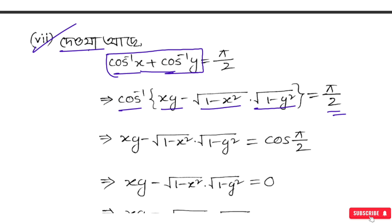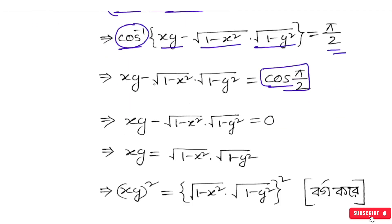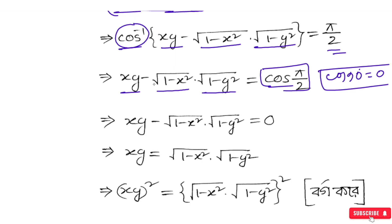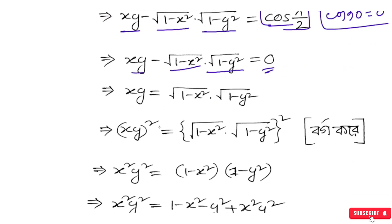Now, using the formula: cos⁻¹x + cos⁻¹y = cos⁻¹(xy − √(1−x²)·√(1−y²)). We equate this to π/2. Nobody can open it because cos of π/2 equals 0, so xy − √(1−x²)·√(1−y²) = 0.